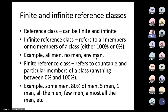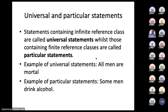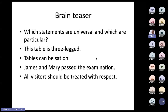Statements containing the infinite reference class are called universal statements, while those containing the finite reference class are called particular statements. Example of a universal statement: 'All men are mortal.' Example of a particular statement: 'Some men drink alcohol' — it contains a finite or countable reference class. The universal statement contains an infinite or uncountable reference class, and particular statements contain a finite or countable reference class. Now a little exercise: which statements are universal and which are particular? 'This table is three-legged' — is it universal or particular?